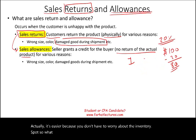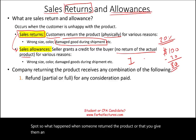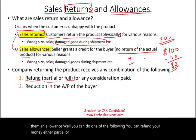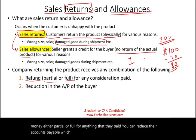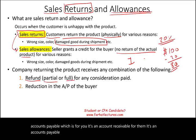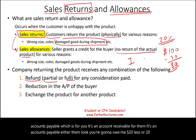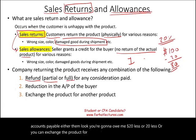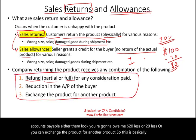So what happens when someone returns the product or you give them an allowance? You can do one of the following: you can refund their money, either partial or full, for anything that they paid. You can reduce their accounts receivable — which is accounts payable for them. You can tell them they're going to owe you $20 less, or you can exchange the product for another product. That's basically what actually happens in the real world.